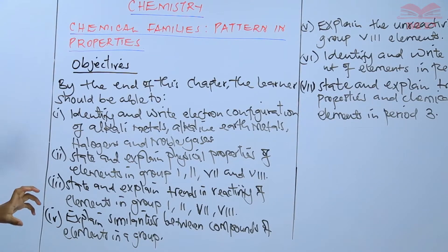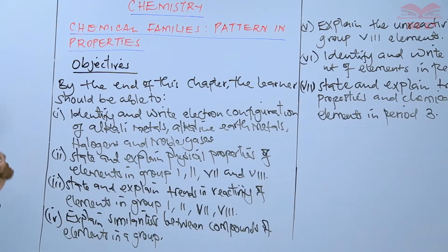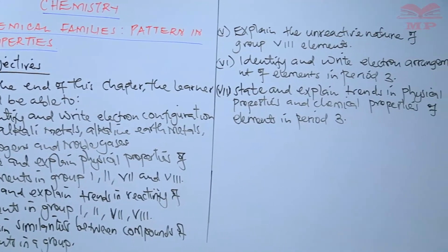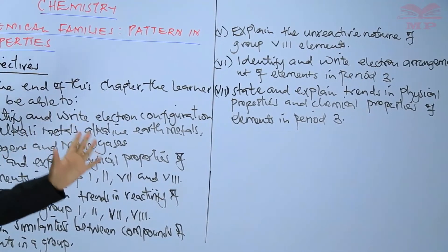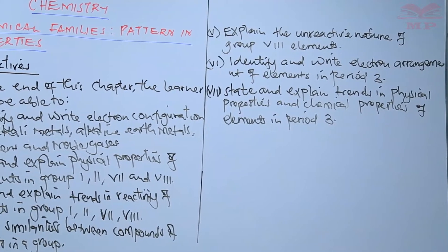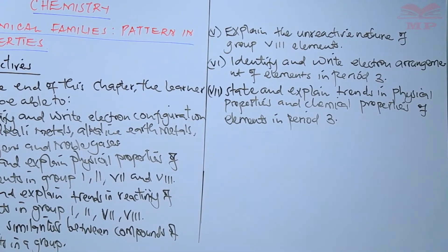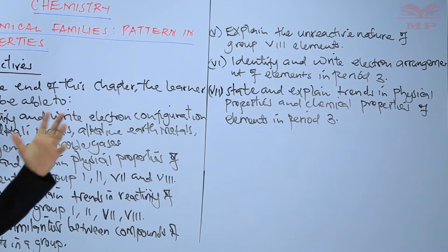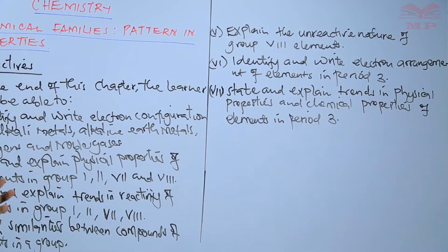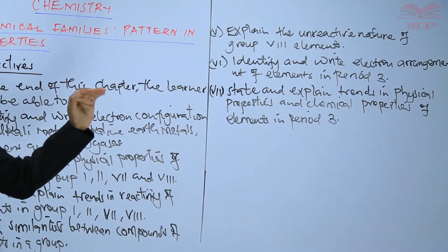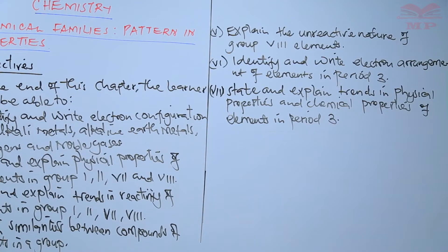Explain similarities between compounds of elements in a group — we will see these compounds. Next, explain the unreactive nature of group eight elements. You will see that group eight elements are chemically unreactive, and therefore we will be able to explain why they are chemically unreactive.